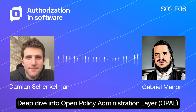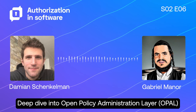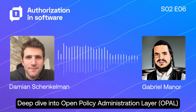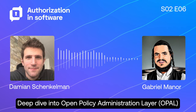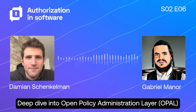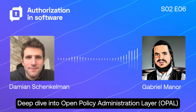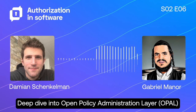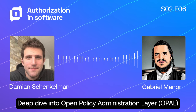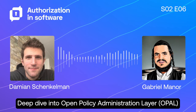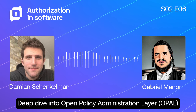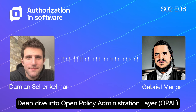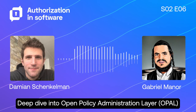My name is Gabriel, and I've been doing software engineering for many years. What I'm really counting is my years in authorization, particularly in the field of access control. In 2015, I started working at Cisco on a product called Cisco ISE, which is a server to authenticate and authorize users to the network — something that's less common today because we use zero trust, authenticating and authorizing users at the application level instead.